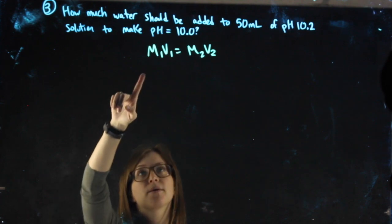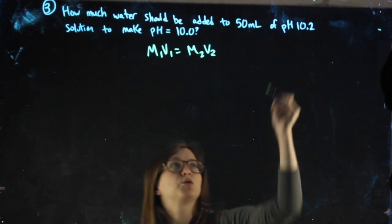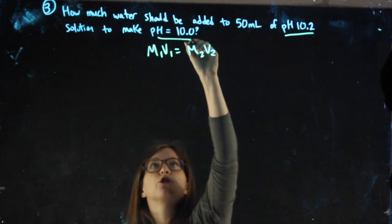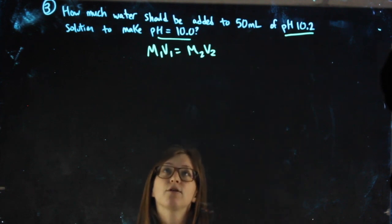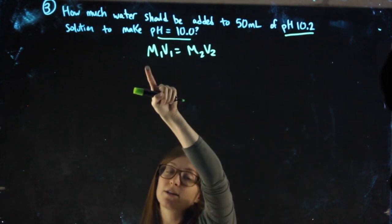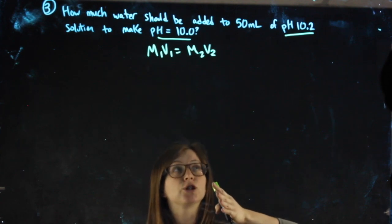Also, for this formula to work, if you're diluting a base, which we are because our pHs are above 7, both of our molarities have to be hydroxide, they can't just be hydrogen.